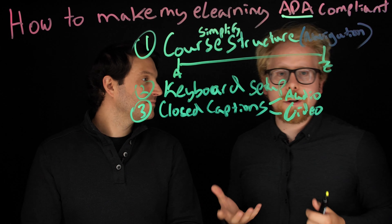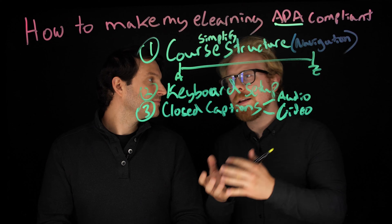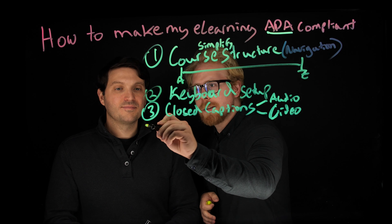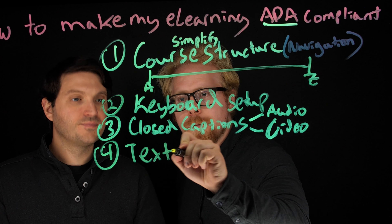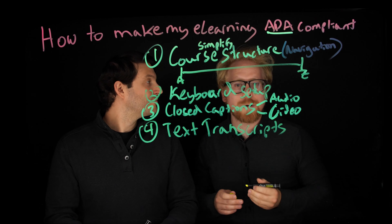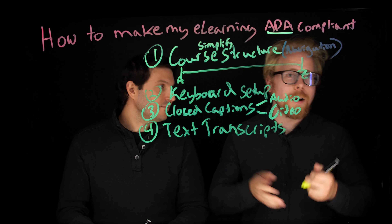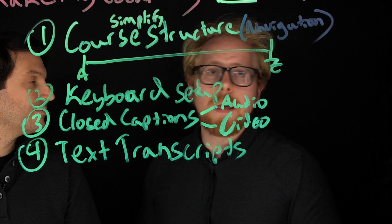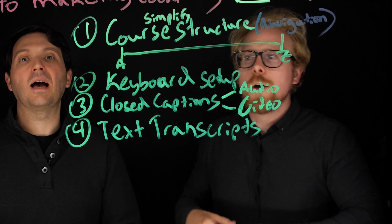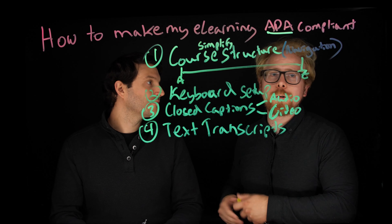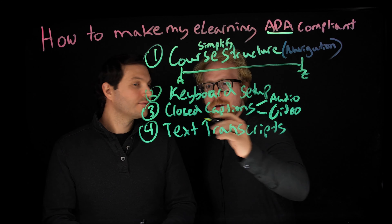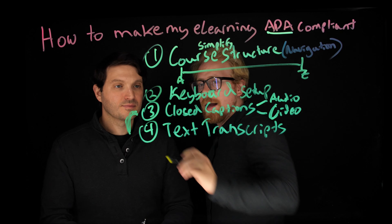Every video or e-learning you create should have an option to pull up subtitles and closed captions. Another way to do this is to have text transcripts of everything. If you have videos in your e-learning, make sure the entire transcript is accessible to your learner. If you have an audio bite, same thing — have the transcript. These aren't hard to do. Use a site like rev.com, upload your audio or video there, get the transcript, and you can export it as both a closed caption file and a transcript.